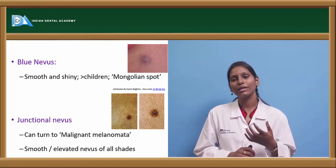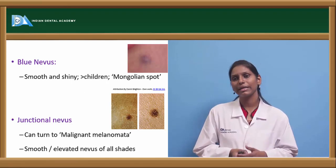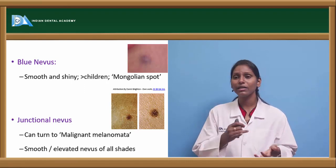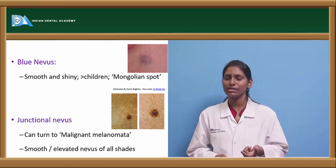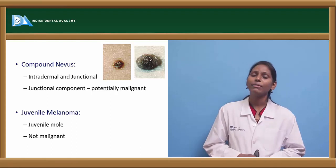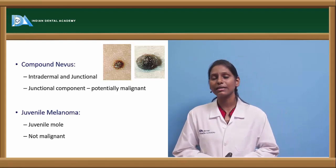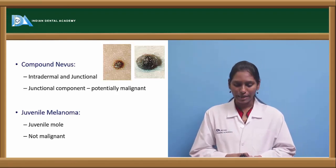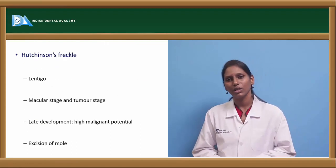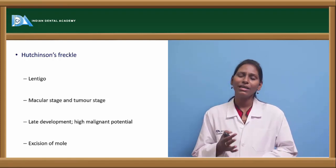Junctional nevus can appear in black, brown, or light bluish or reddish shades. Compound nevus can be epidermal, intradermal, or junctional — the junctional component again has more malignant potential. Juvenile melanoma is usually benign and not malignant, occurring in children.